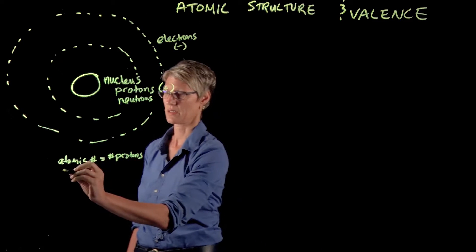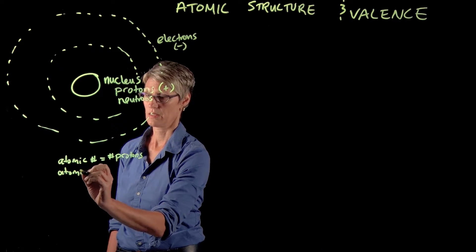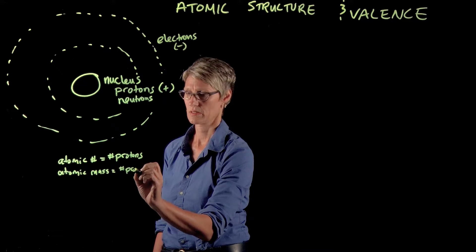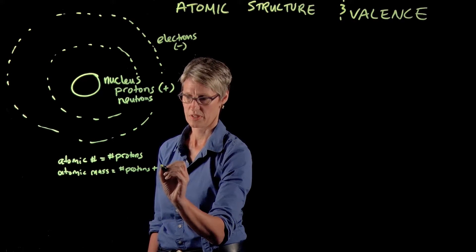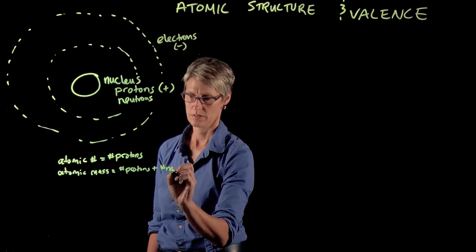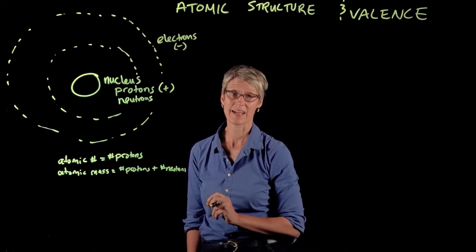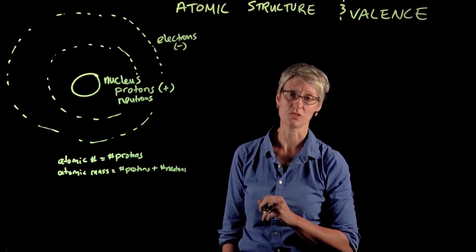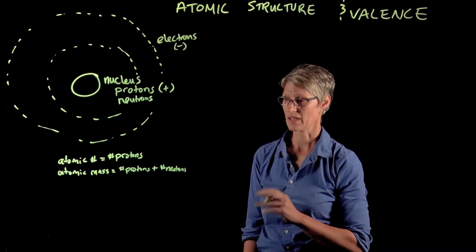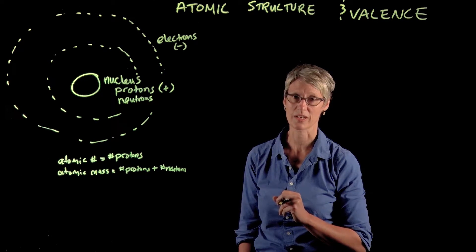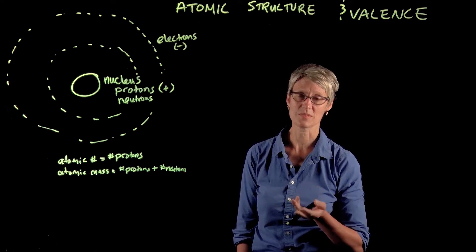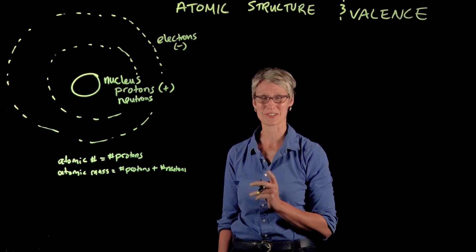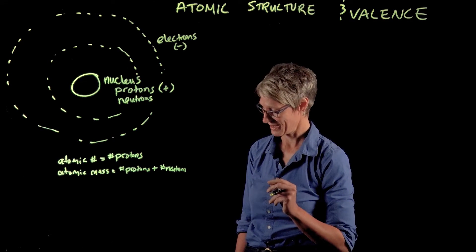There's another quantity called the atomic mass — and these do get confused sometimes. The atomic mass is equal to the number of protons plus the number of neutrons. The atomic mass can actually vary among atoms within an element, because within an element there's variability in how many neutrons an atom can have. When you have two different atoms of the same element with different masses, those are called isotopes. Although isotopes are an area of great research interest for me, they don't enter into this class very much, so I'm not going to say anything more about that.